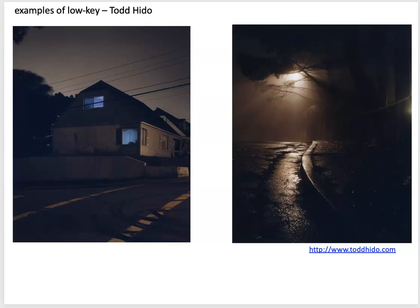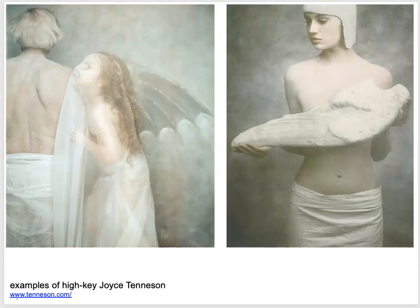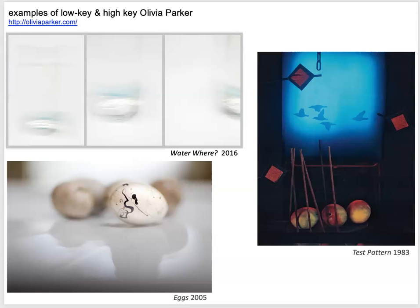For high key photography, most of the tonal information is on the right side of the histogram. Some artists to look up: Joyce Tennyson, who does a lot of high key imagery — she puts baking flour on her subjects' skin so it doesn't get shiny and overexposed. Olivia Parker is another photographer to explore, and her work goes between high key and low key photography.